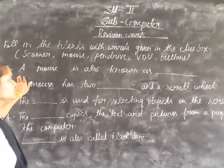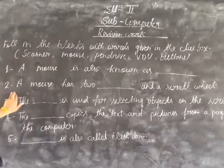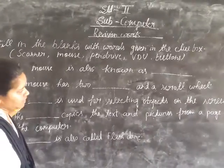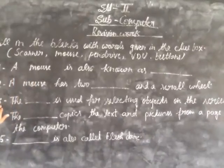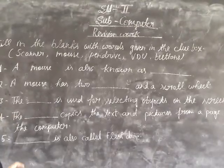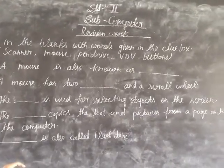First, a mouse is also known as blank. Second, a mouse has two blank and a scroll wheel. Third, the blank button is used for selecting objects on the screen.